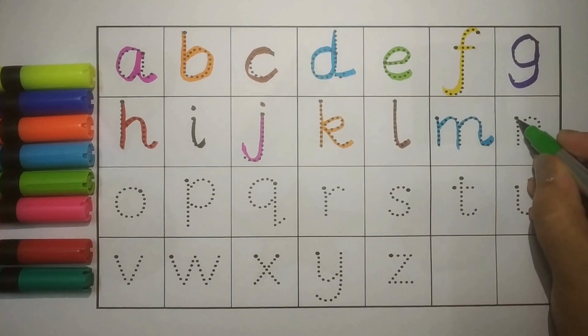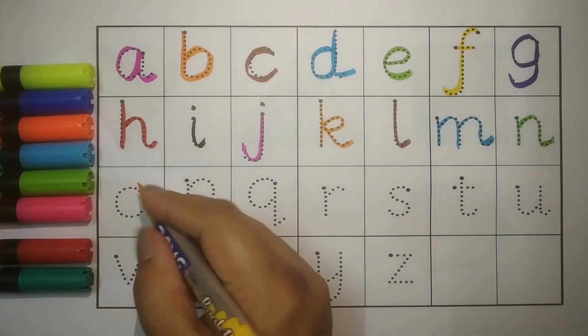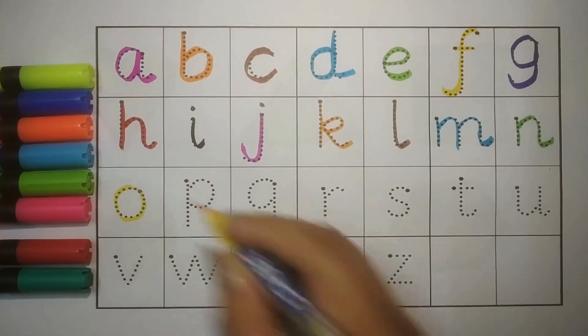N, N for Nest Ghosla. Yellow. O, O for Orange Santara.